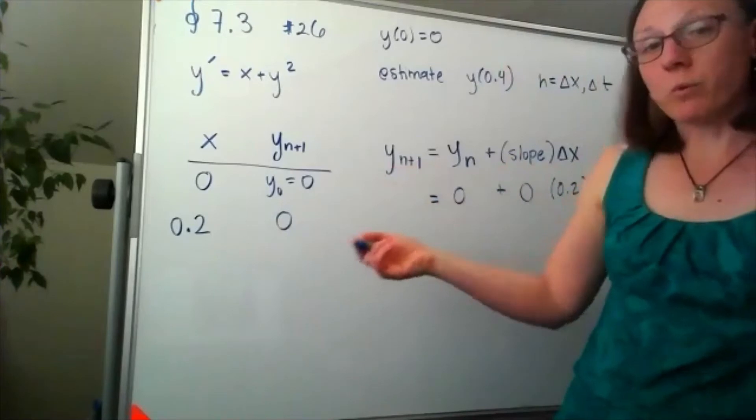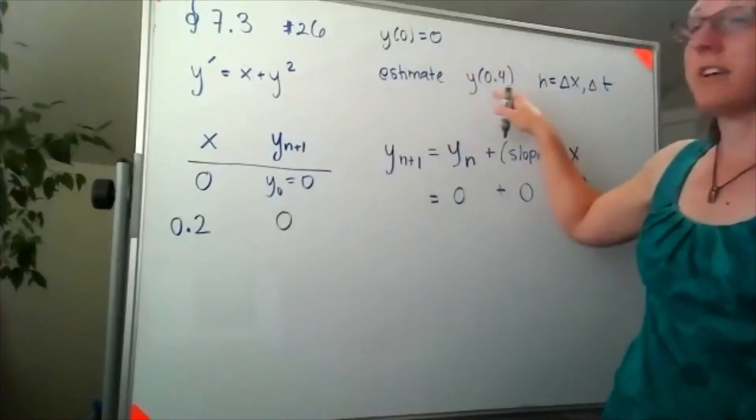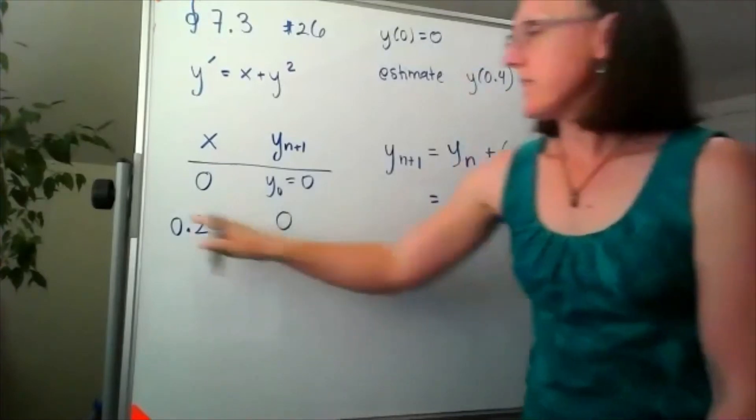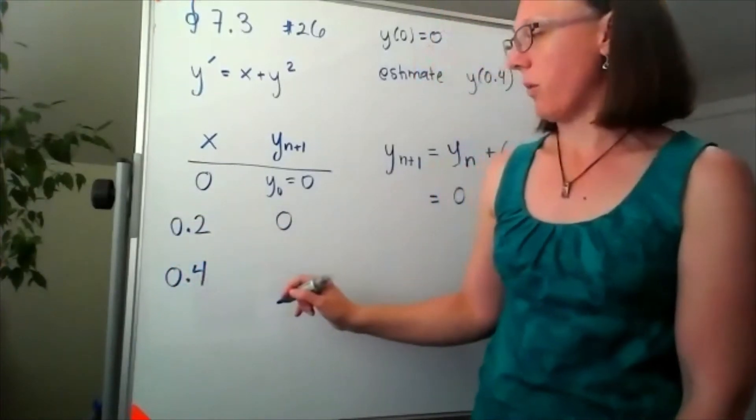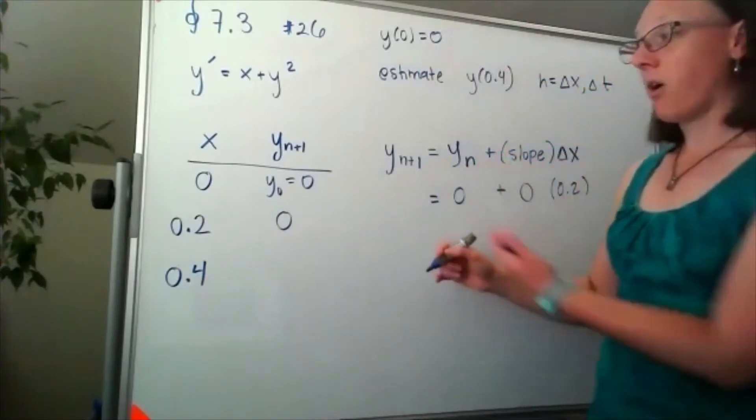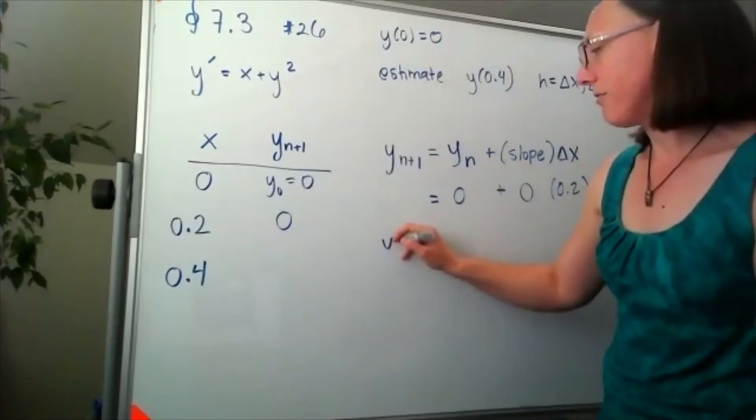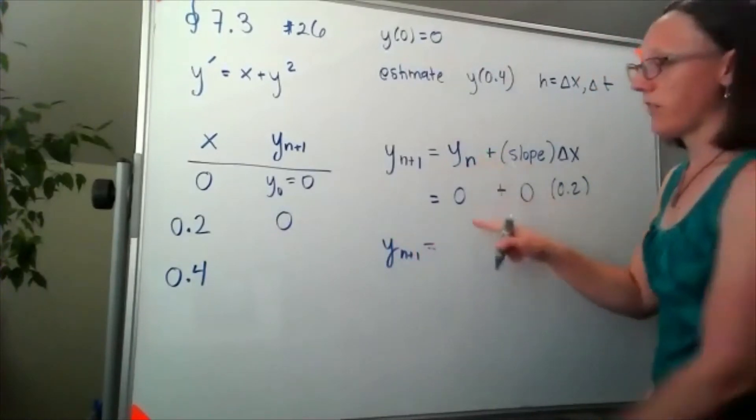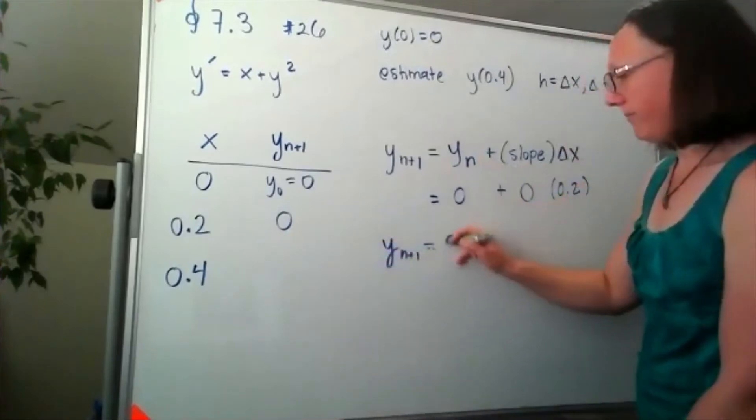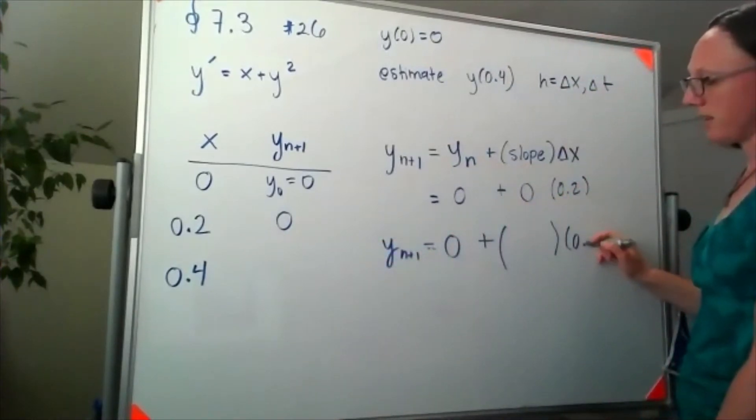Now we're not at the x value we were looking for yet. We're looking for an x value of 0.4, so we're going to need to take one more step to get down here to 0.4. To figure out where we're at, I'm going to find my next point by looking at the y value that I'm at right now plus my slope times delta x.